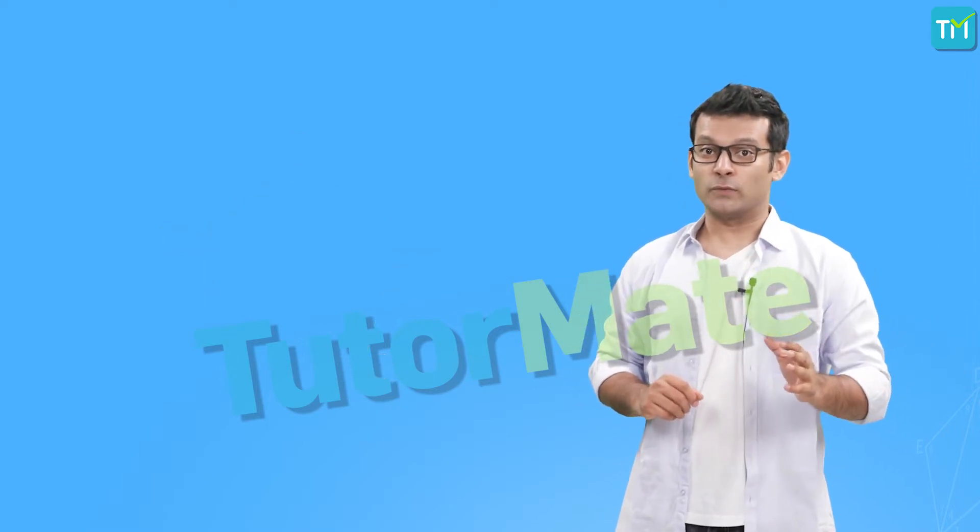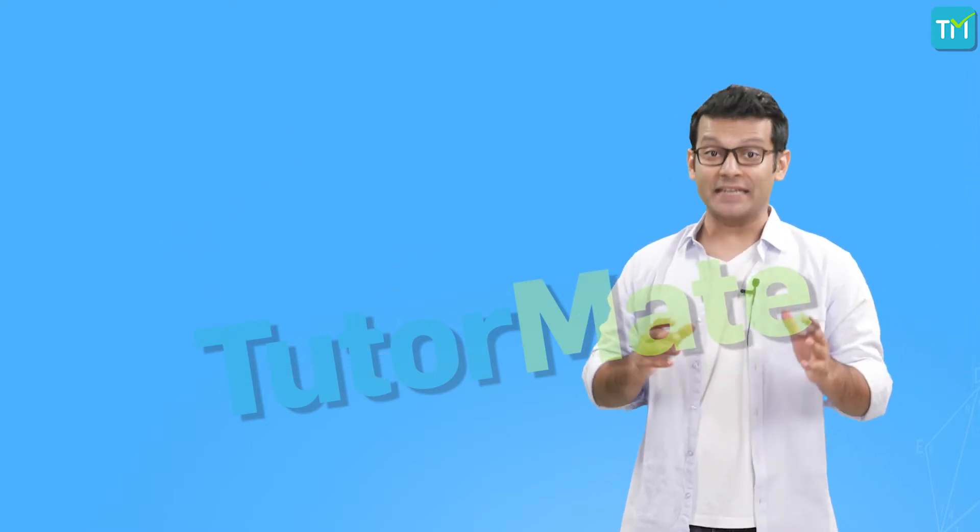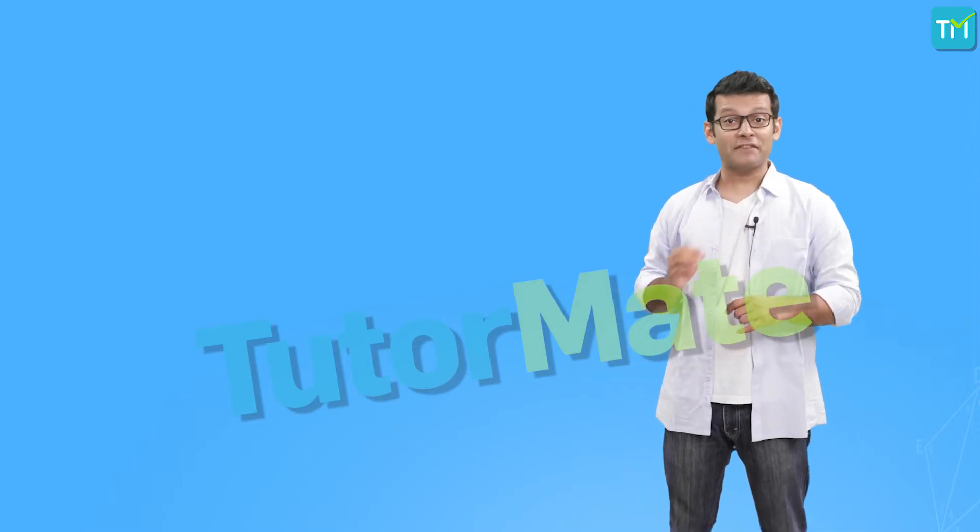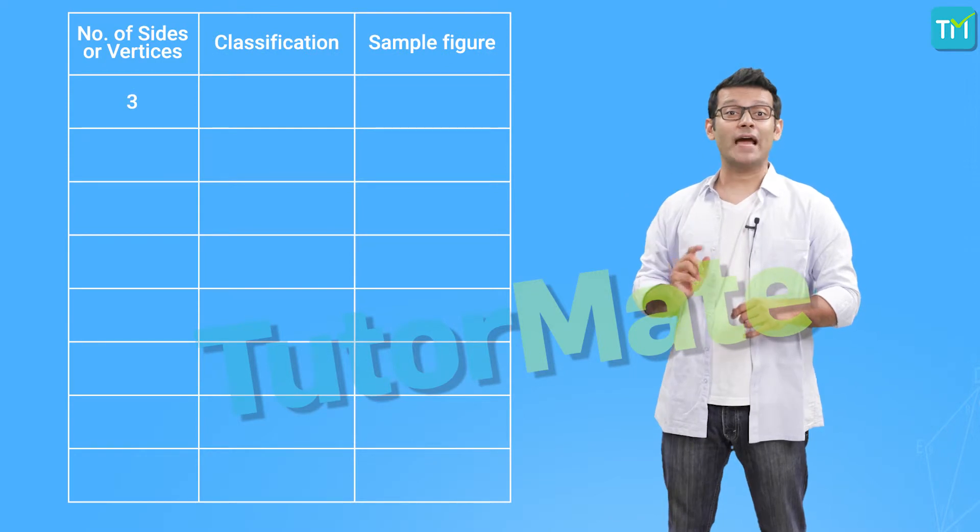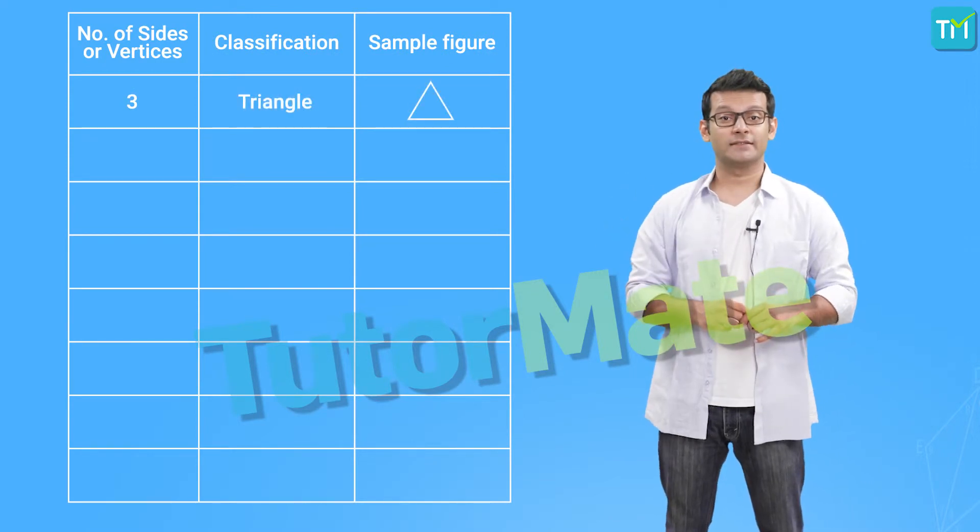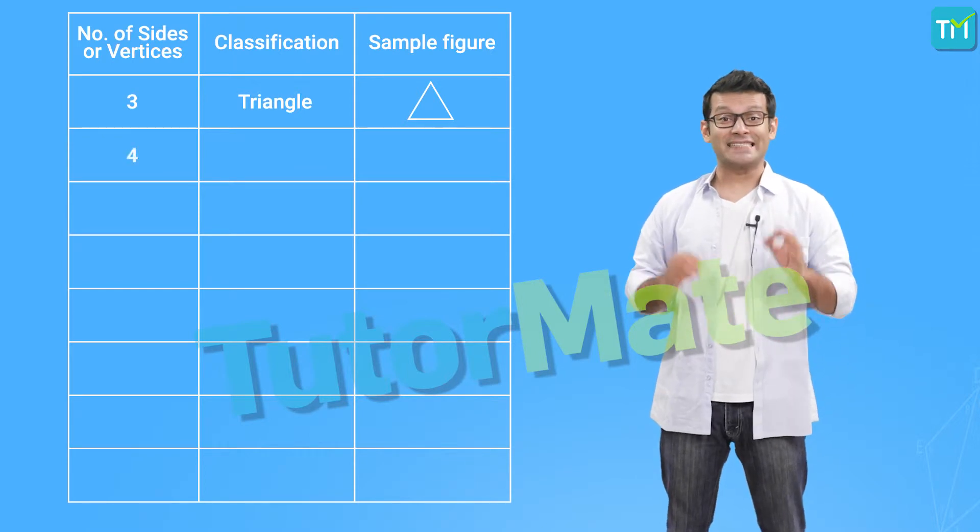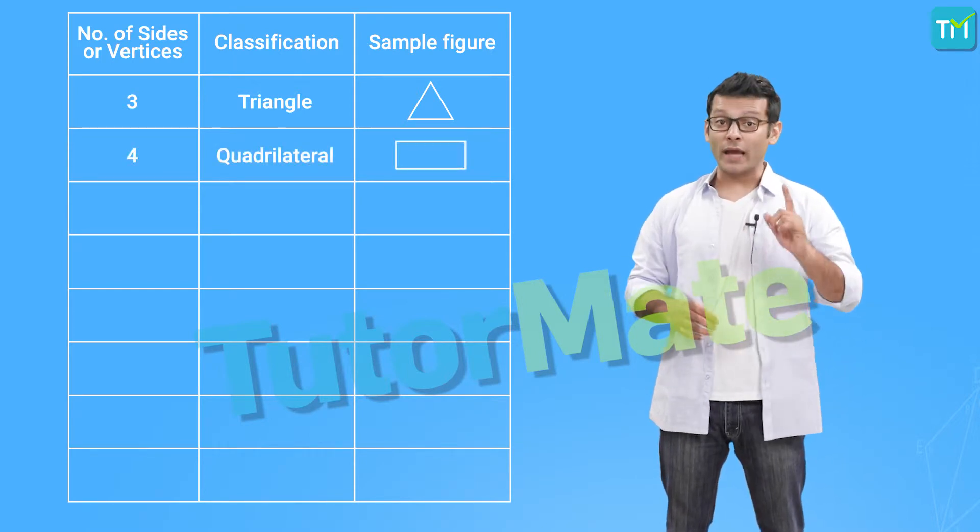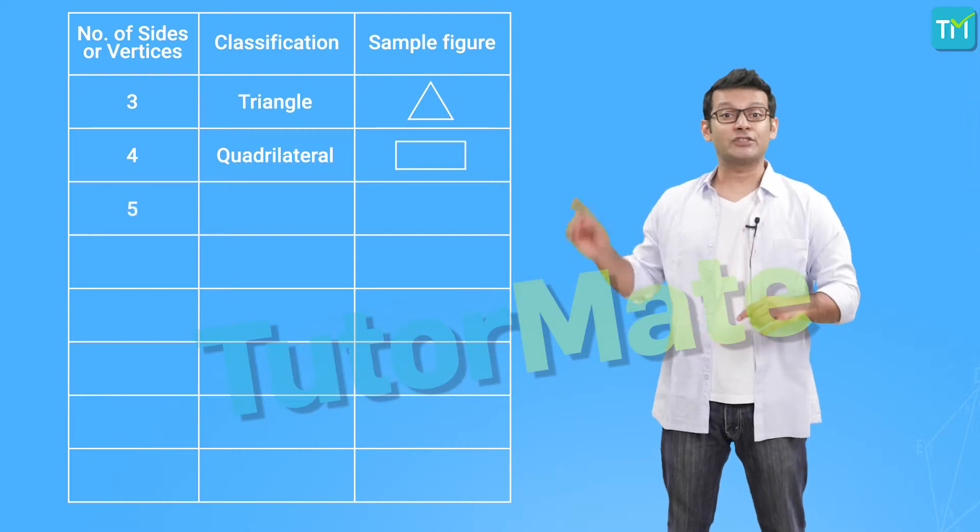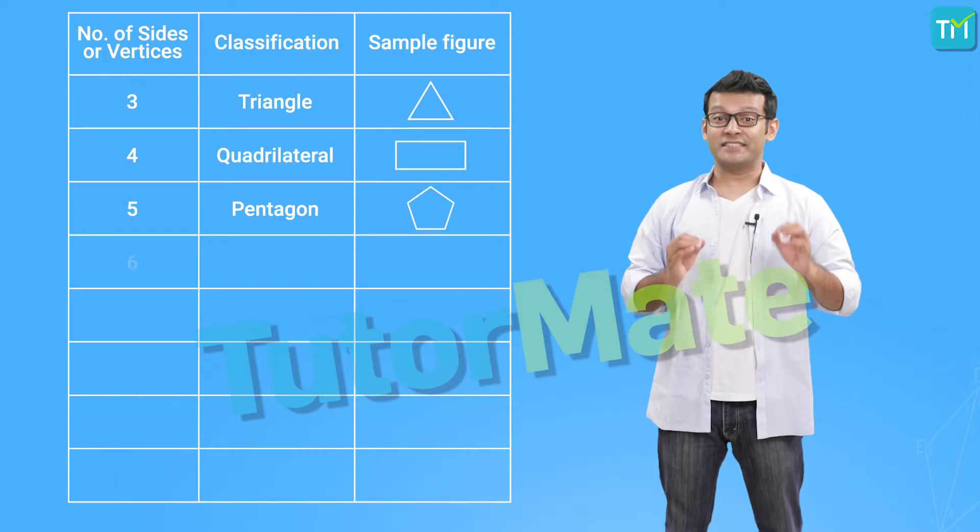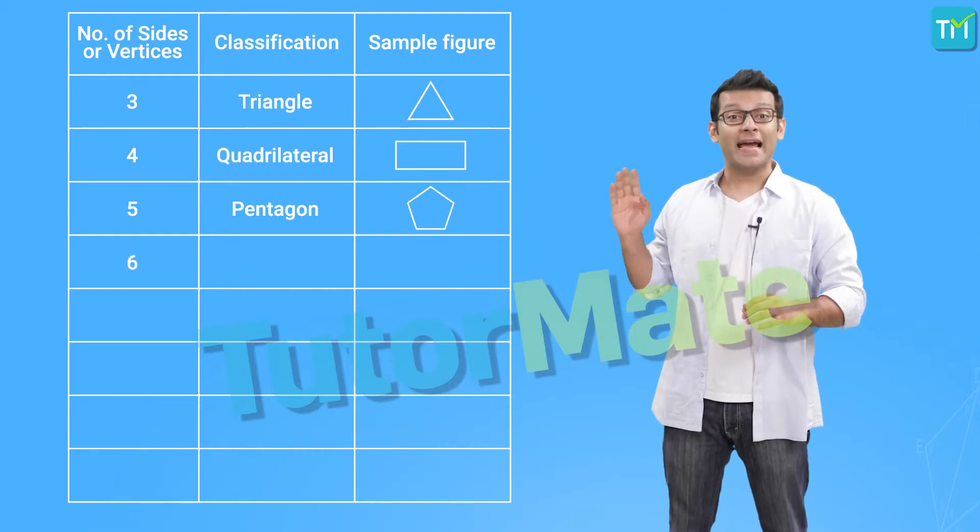According to the number of sides, we can classify polygons and give them different names. So, a polygon having three sides is known as a triangle. At the same time, a polygon with four sides is named a quadrilateral while the one with five sides is called a pentagon. And, a polygon with six sides is called a hexagon.